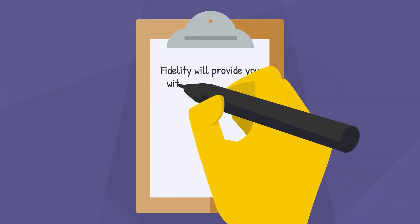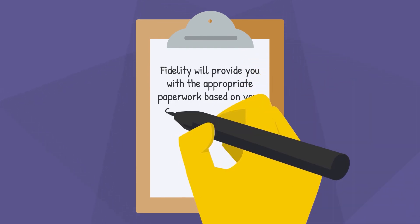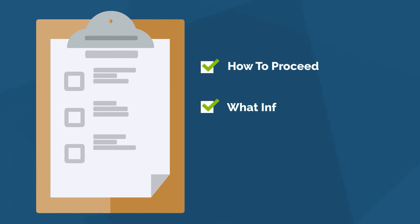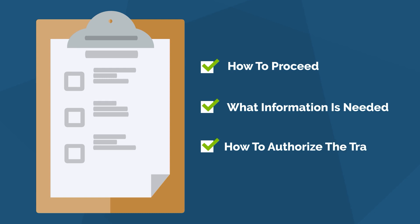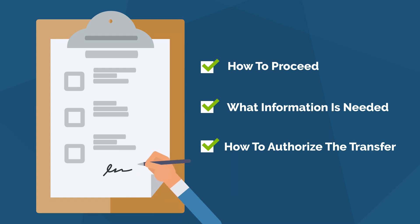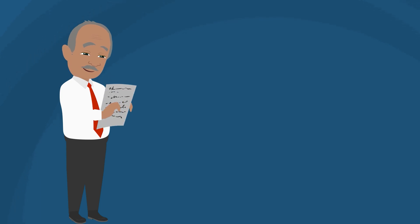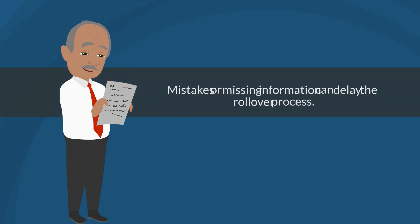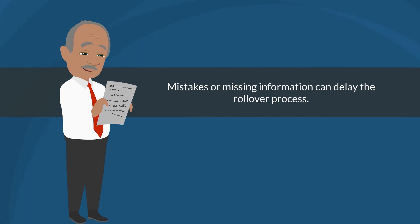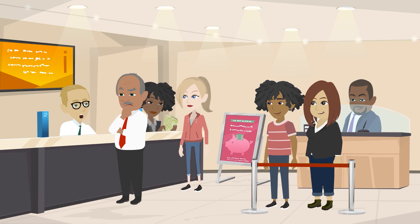Fidelity will provide you with the appropriate paperwork based on your chosen rollover type. These forms will include instructions on how to proceed, what information is needed, and how to authorize the transfer if it's a direct rollover. Make sure to carefully complete all the required fields and provide accurate information. Take the time to review all the information on the forms to ensure accuracy, as mistakes or missing information can delay the rollover process. Once you are confident that everything is correct, submit the completed forms to Fidelity as instructed by their representatives.